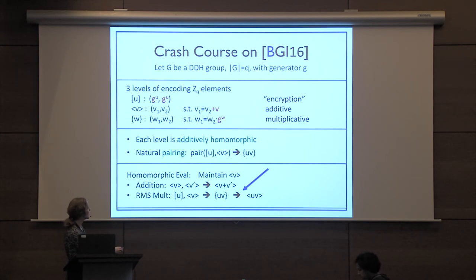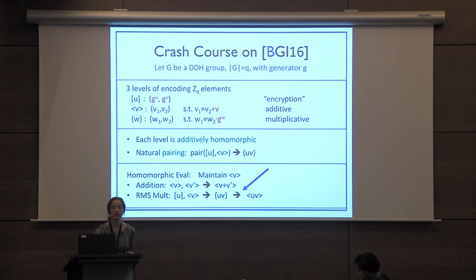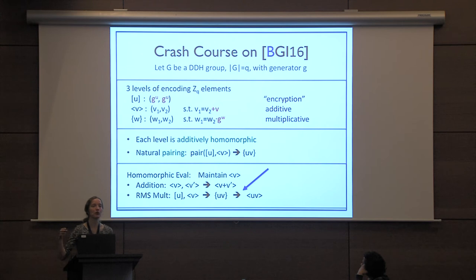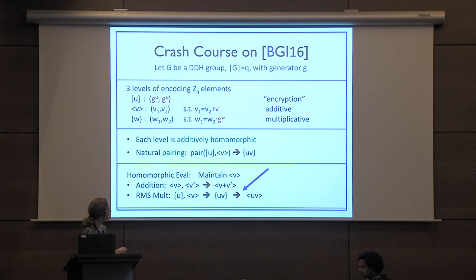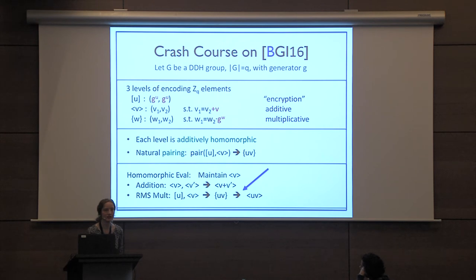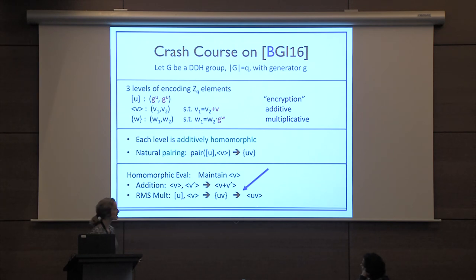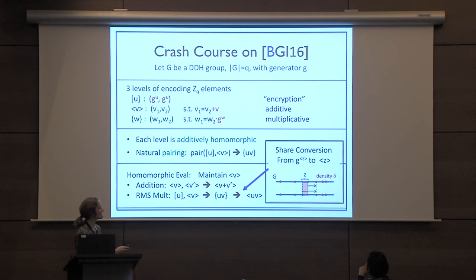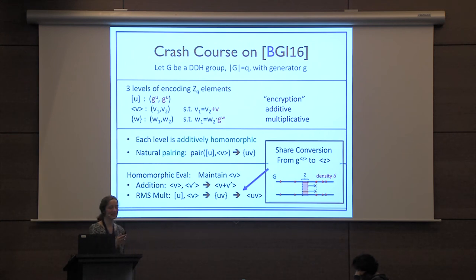The question is how to get back from level-three shares to additive shares, needed to maintain the invariant for the next step. This is the share conversion procedure — one of the interesting, technical, and somewhat mysterious parts of this work. Essentially, we think of the cyclic group G laid out as steps of multiplication by the generator; the two parties hold group elements that differ in discrete log by the payload Z = U·V.